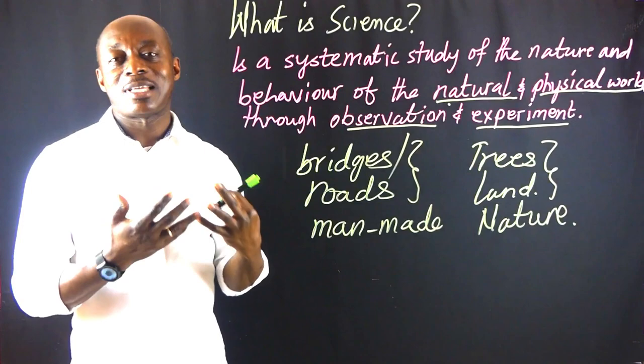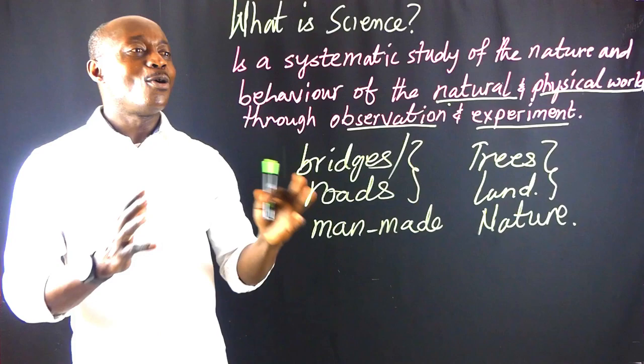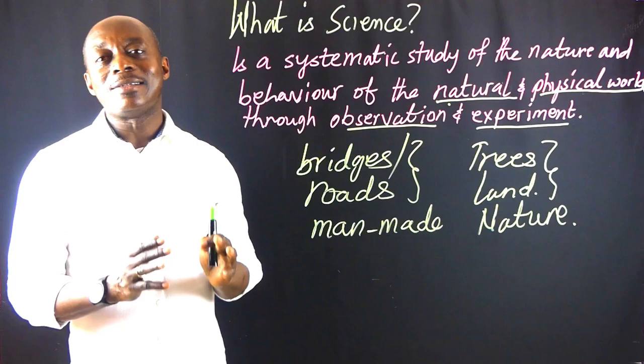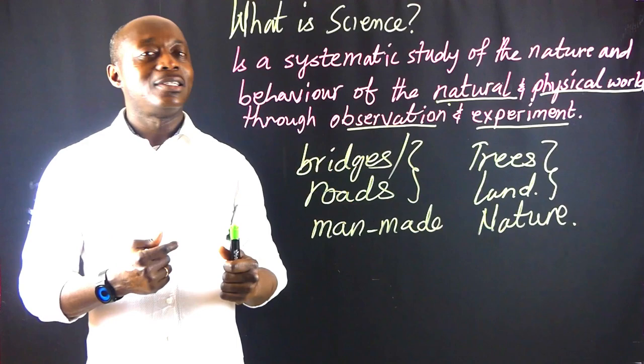The only difference is that the natural world constitutes only the things made by nature, whereas the physical world includes things made by nature as well as man-made ones also.